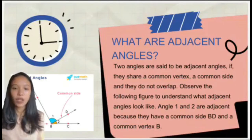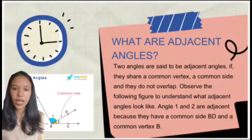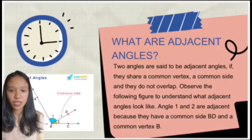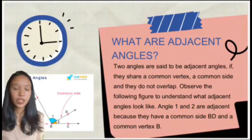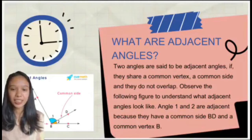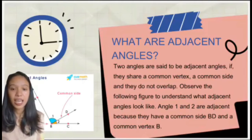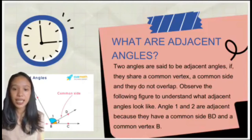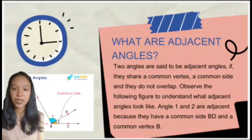Observe the following figure to understand what adjacent angles look like. Angle 1 and angle 2 are adjacent because they have a common side BD and a common vertex B.